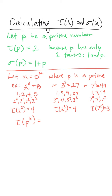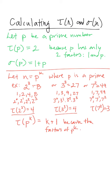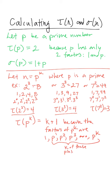In general, tau of p to the k power doesn't depend so much on what the prime number is, but on what the exponent is. Both 2 to the third and 3 to the third had four factors, and in fact any prime number like 19 to the third or 227 to the third would also have four factors. So in general, tau of p to the k is k plus 1, because the factors of p to the k are 1, p, p squared, p cubed, continuing up to p to the k — that's k of these plus one more factor.